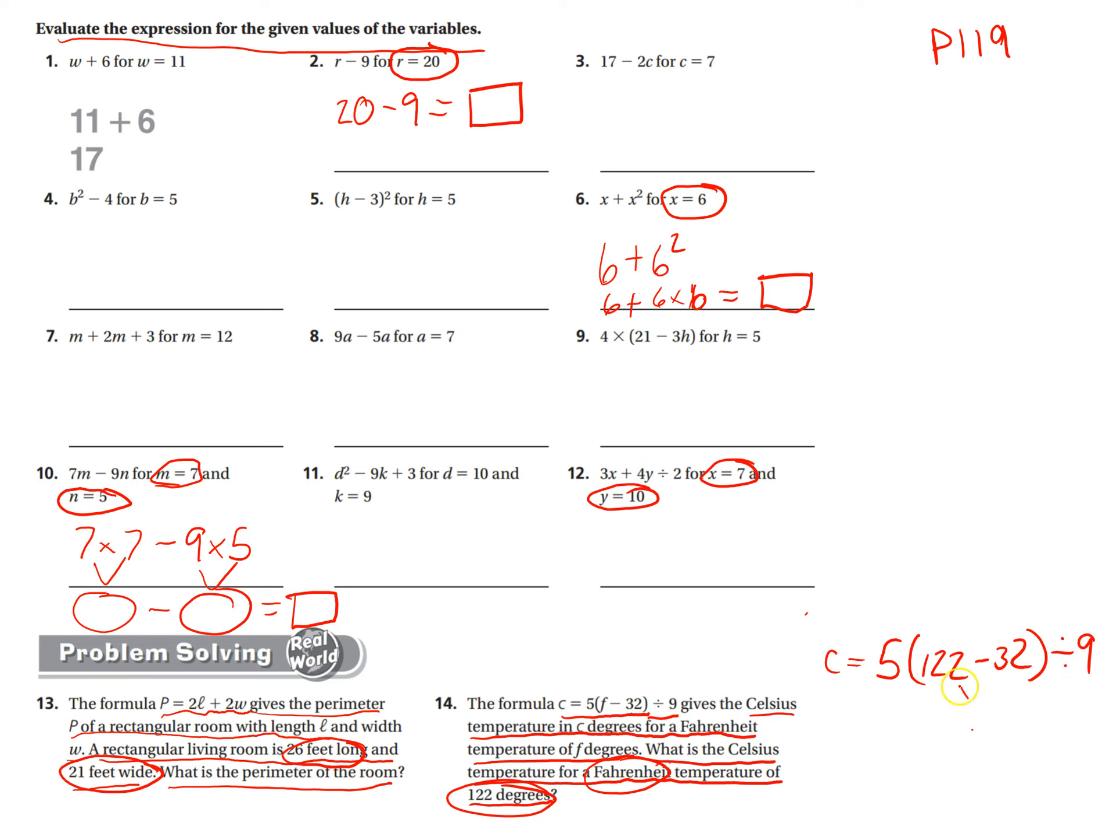So we have order of operations says parentheses first. So I'm going to do that. And then the 5 is right next to the parentheses. So that means multiply. And then divide by 9. Now order of operations says multiplication and division are tied. So I start at the left and I work my way right. So you're going to get this answer. Then take this answer, divide it by 9. And this will give you your final answer.